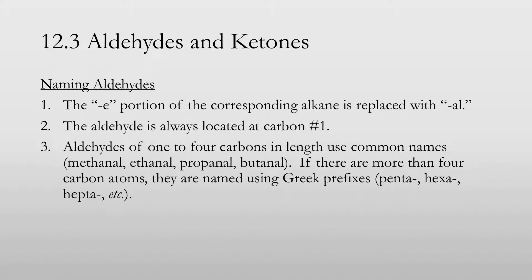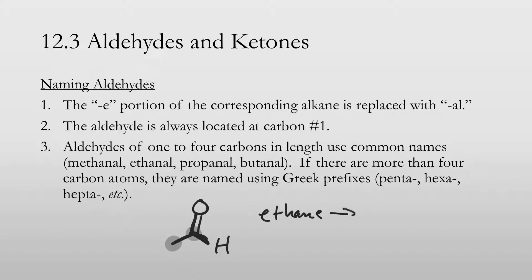When naming aldehydes, the '-e' portion of the corresponding alkane is replaced with '-al.' So the molecule from before has two carbons — it comes from ethane and becomes ethanal. The aldehyde is always located at carbon one. Aldehydes of one to four carbons in length use common names: methanal, ethanal, propanal, and butanal.